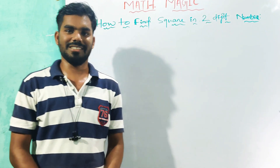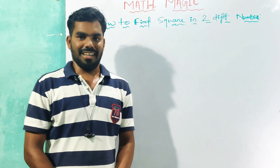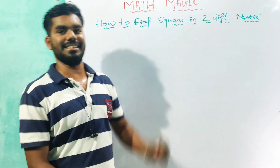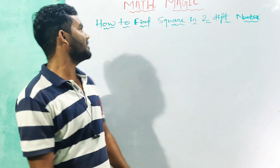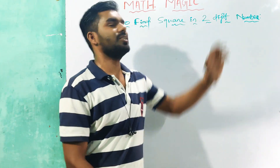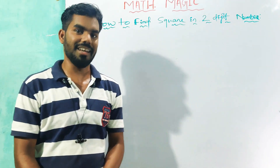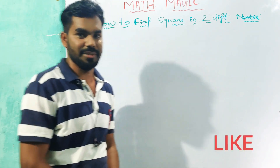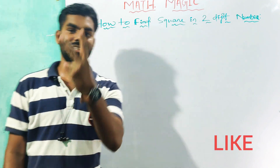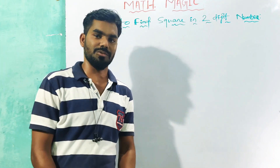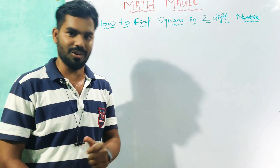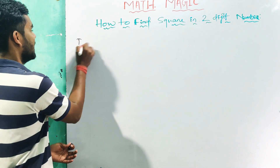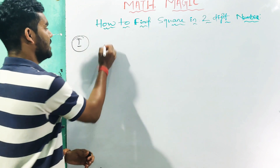Hello students, welcome to our channel Akshay Math. In this video we are going to know about math magic — how to find the square of a two-digit number within five seconds. Like and share the video. First trick: two-digit number square. Suppose 37 squared.